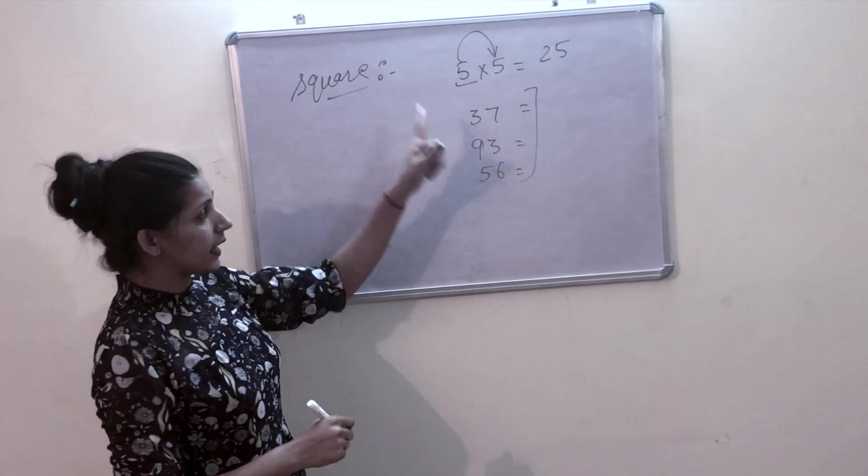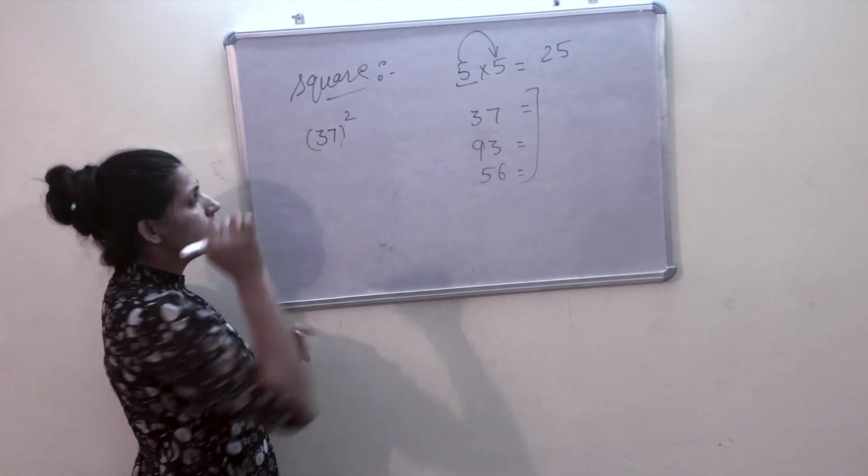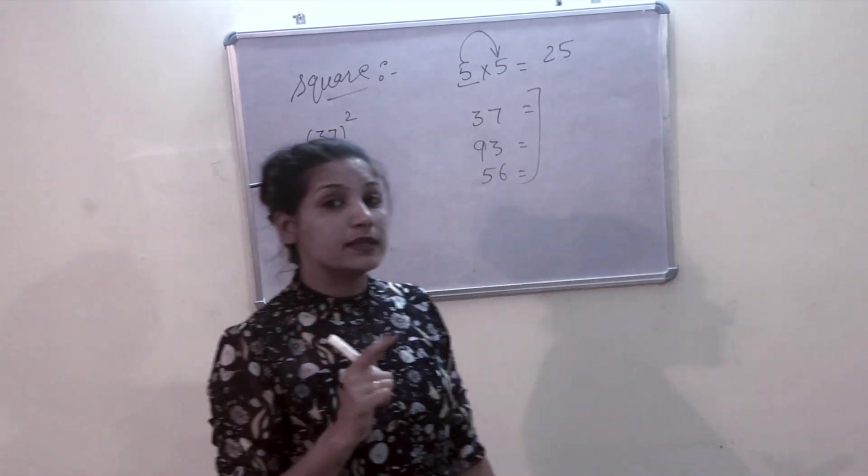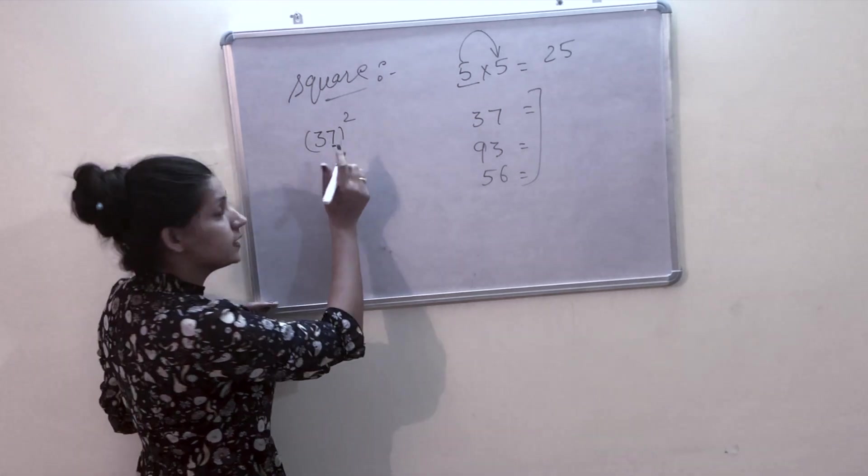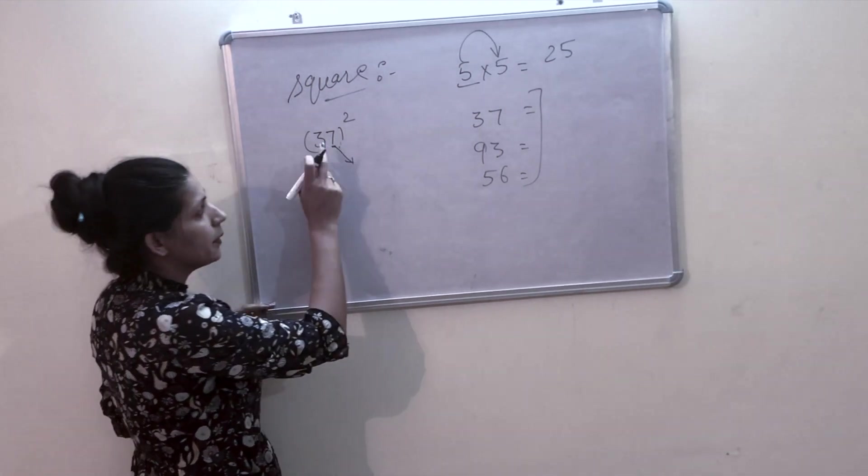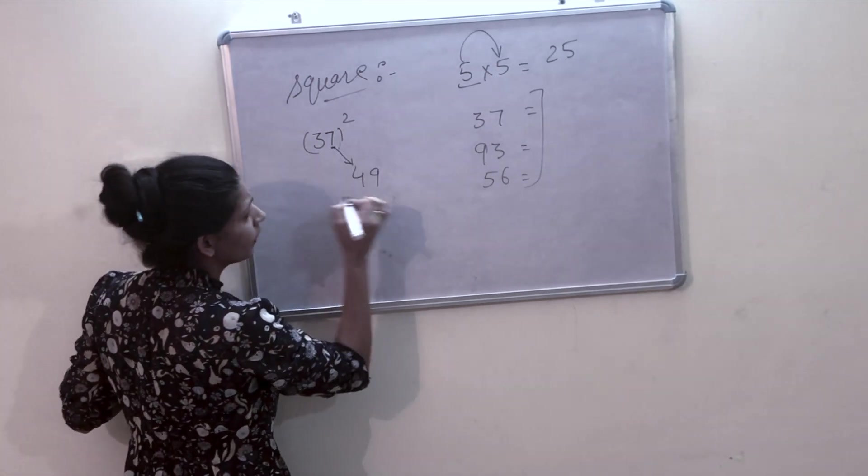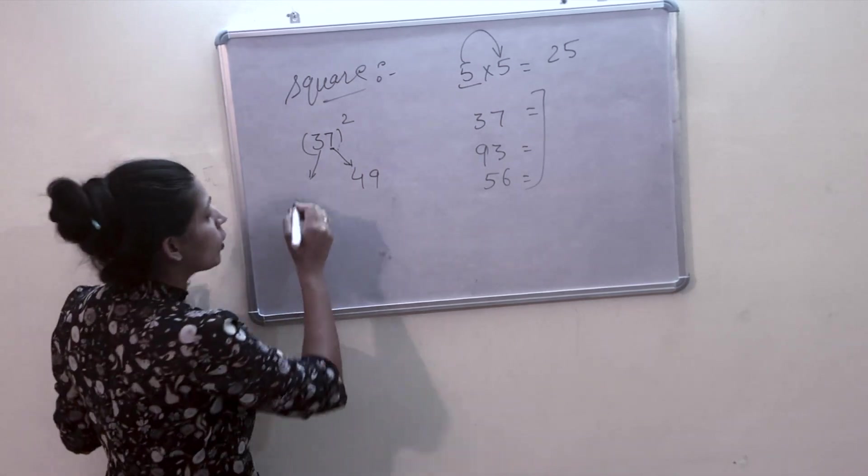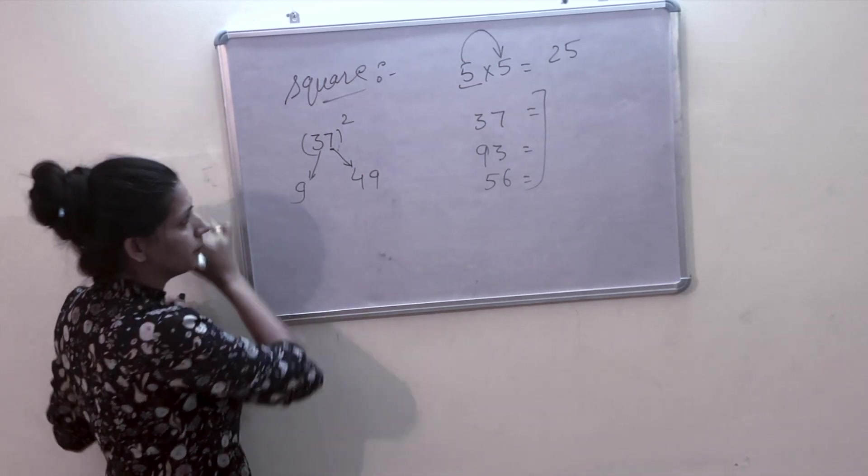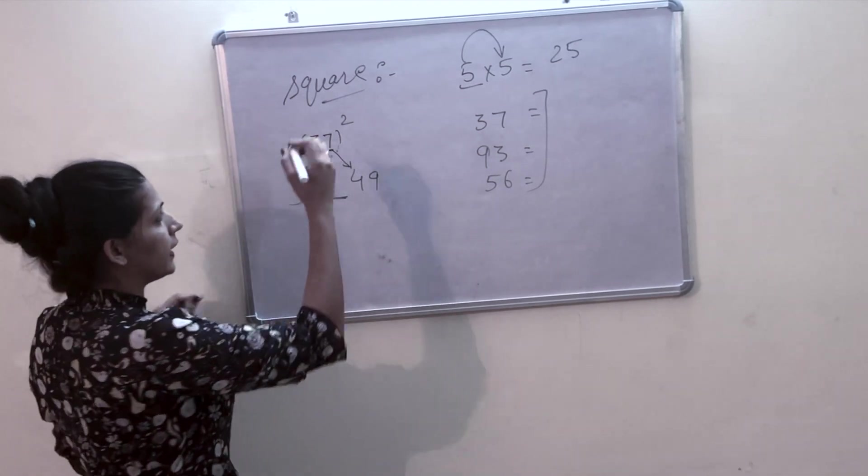Our first example is to take the square of 37. What do we do? First, we take the square of 7, which is 49. Then we take the square of 3, which is 9. Now we will multiply them all.